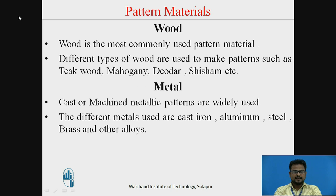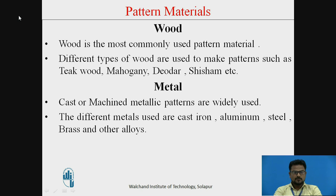Next is Pattern Material. It is very important to select the right pattern material. There are many different types of pattern materials, such as metal, plastics, plaster of Paris, wood, wax, etc. The quality and finish of the casting depends mainly on the type of material used for the pattern. Factors to be considered while selecting a pattern material include: number of castings to be produced, size and shape of the casting, durability of the pattern, and degree of mold accuracy and surface finish required.